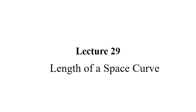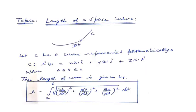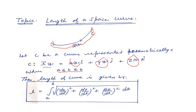Let's start with the concept of what the length of a curve actually is. Suppose we have a curve C, represented parametrically by the vector r, which has three components: x·i, y·j, and z·k. Here x, y, and z are all functions of the parameter t. If not, first convert x, y, z in terms of t. The parameter t varies from a to b, where a is the starting point and b is the final point of the curve.